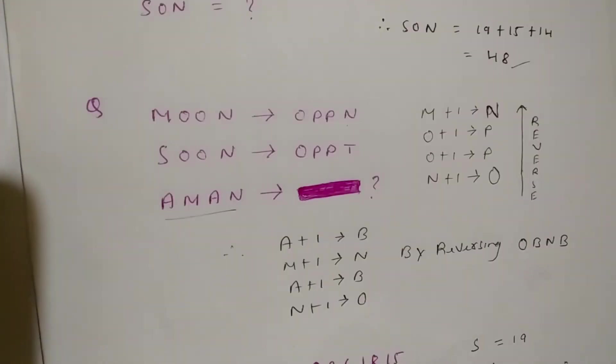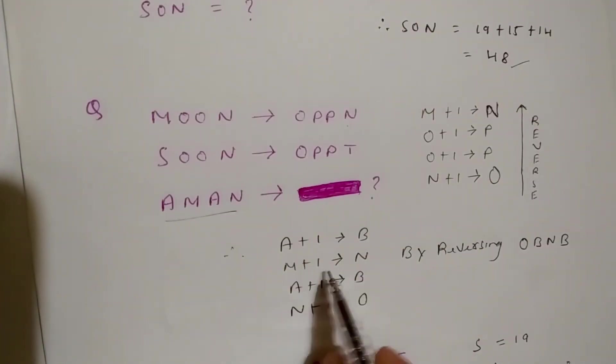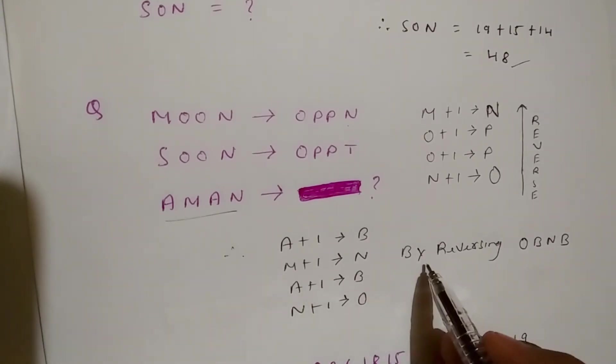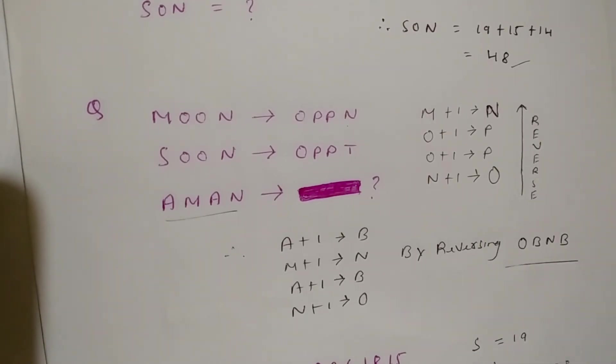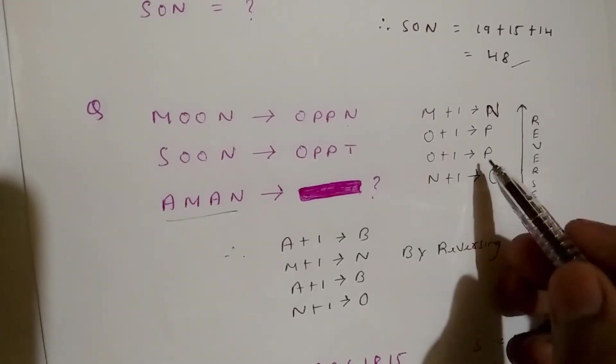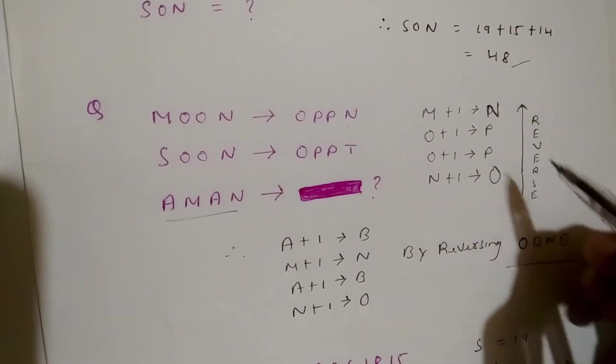What comes after A? B. What comes after M? N. What comes after U? V. What comes after N? O. And then by reversing it, we get OVNB. This is our answer. This is the trick: increase by number one and then reverse the whole word to get the answer.